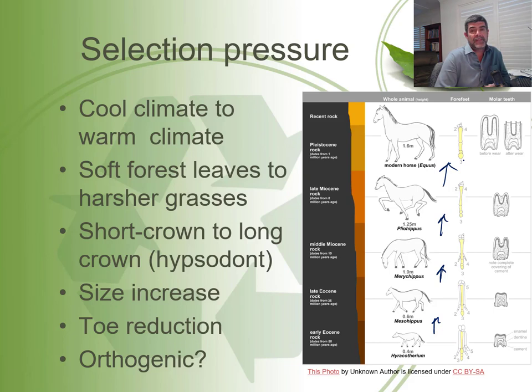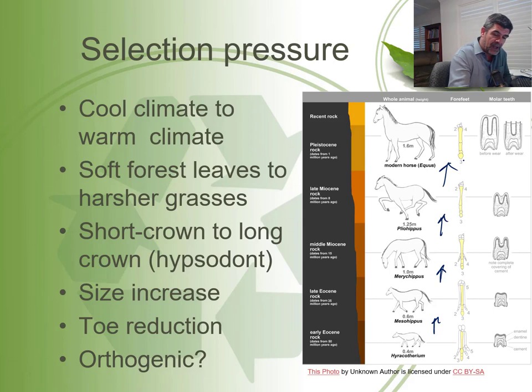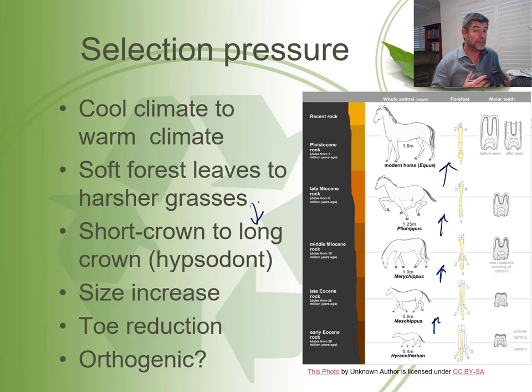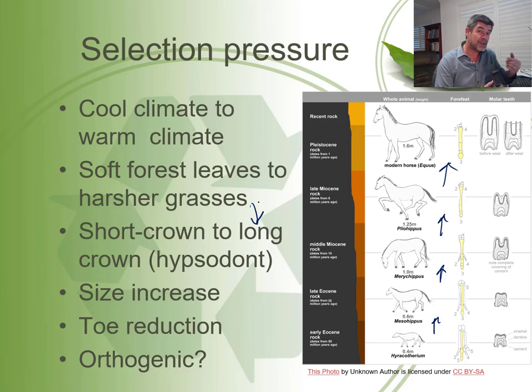What we do know from studies is that there were changes in the climate — from a cooler to a warmer climate — and changes in the nature of vegetation, from soft forest leaves to harsher grasses. Food is strongly tied to dentition and also to digestive system changes. Sometimes one of the simplest changes is just the size of the body: if you're going to be eating food that requires a lot of processing, a lot of time for fermentation and breakdown, you often need a bigger body because you need a bigger stomach to hold all of that.